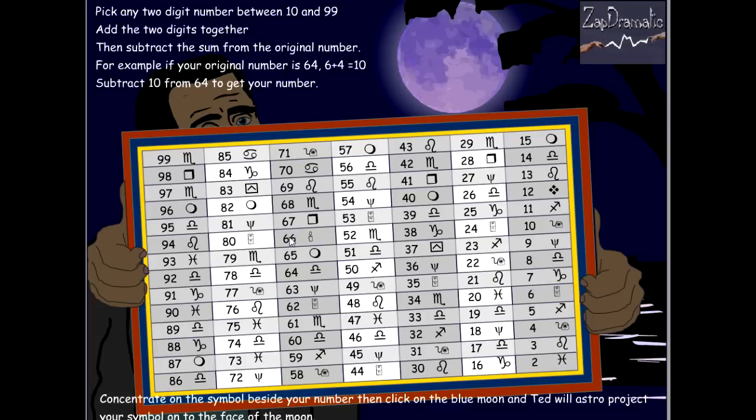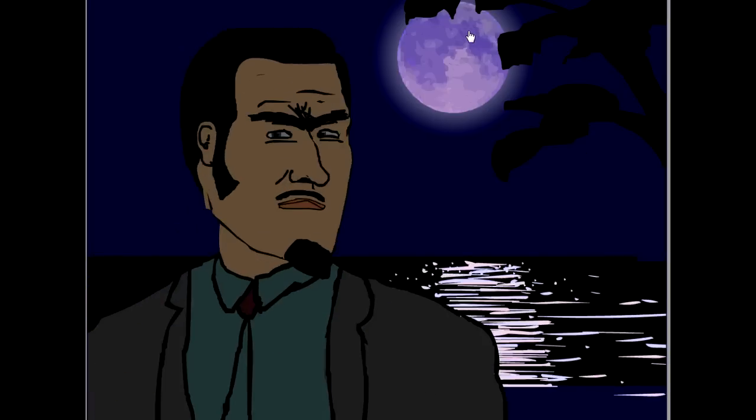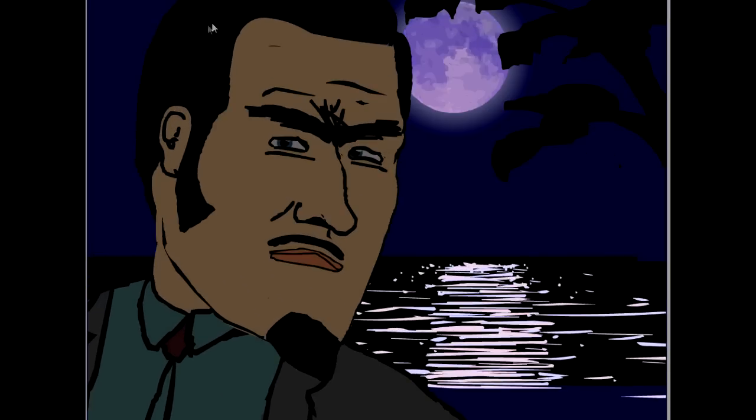Here it is. I guess we just click on the... We look at it, click the blue moon. 63 is the little size symbol. Okay.